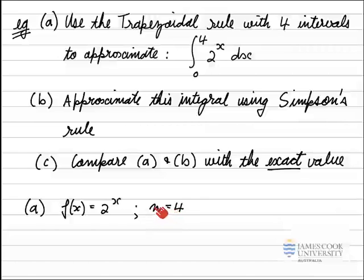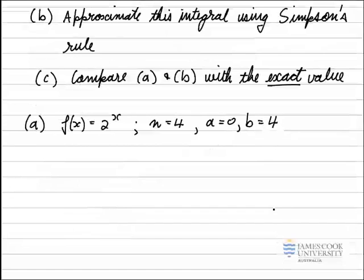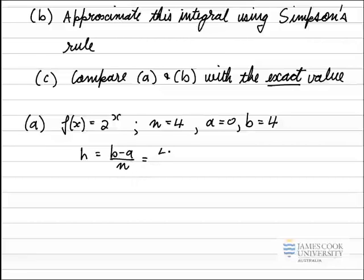With N = 4, that gives us 5 x values and therefore 5 y values. The limits are A = 0 and B = 4. Using the formula for step size, H = (B − A) / N = (4 − 0) / 4 = 1. So the width of each interval is 1.